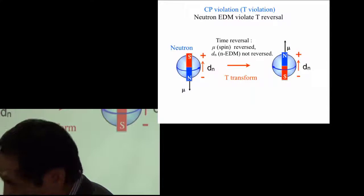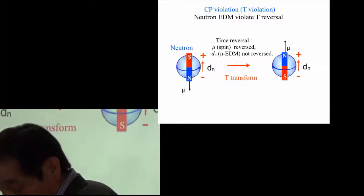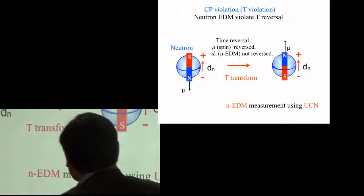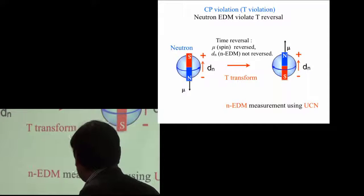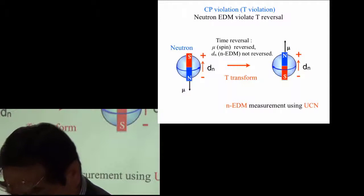If we have only a small amount of EDM, then the time reversal is violated. So we would like to measure this neutron EDM for detecting the time reversal invariance violation.